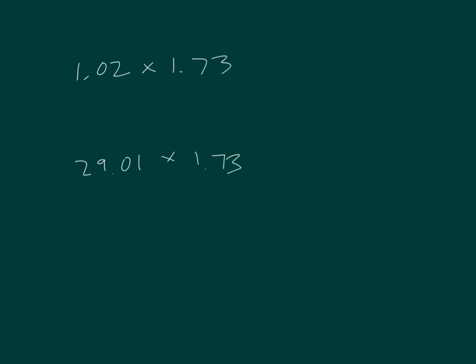Let's compare our products to the second factor in these expressions. Both of these expressions have a times 1.73. We'll consider the first factors to be our scaling factors. So we have the first factor of 1 and 2 hundredths, and a second scaling factor of 29 and 1 hundredths. Will the products be more than, less than, or equal to 1.73?